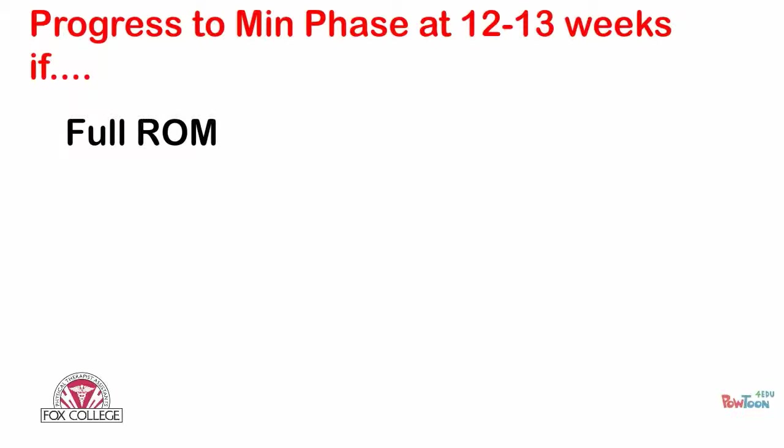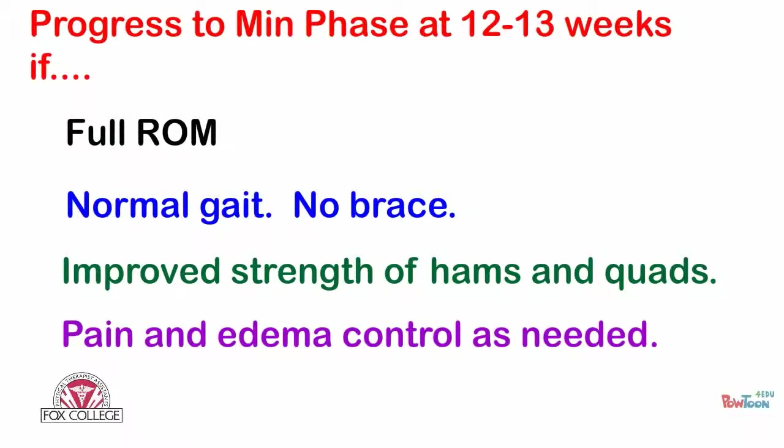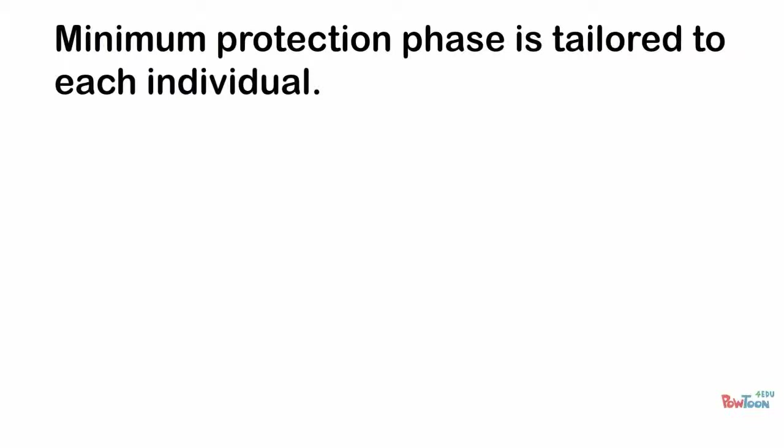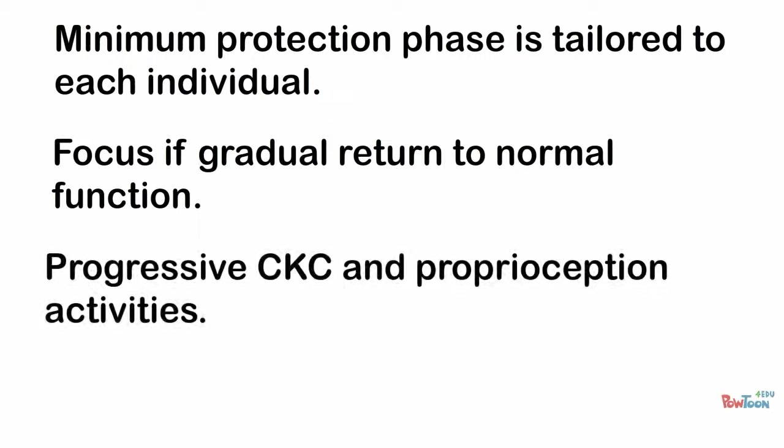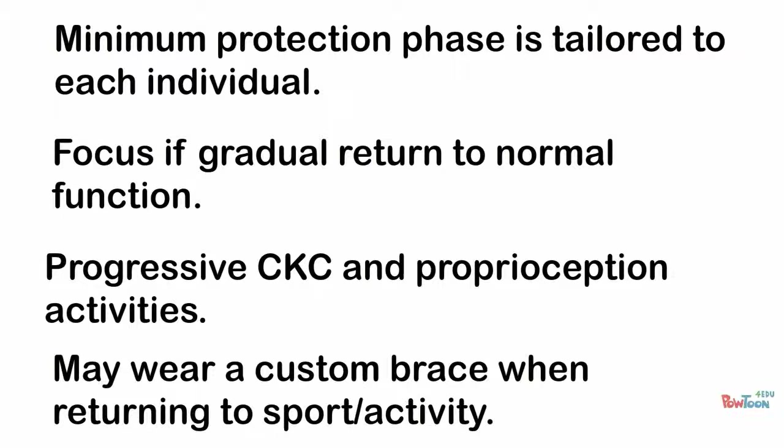Criteria for minimum protection phase progression include full range of motion, normal gait without a brace, improved strength of hamstrings and quads, and pain and edema control — reached at about 12 to 13 weeks. The minimum protection phase is tailored to the individual and includes gradual return to normal function, progressive closed kinetic chain proprioception, and a custom brace may be needed for return to sport or higher-level activities.